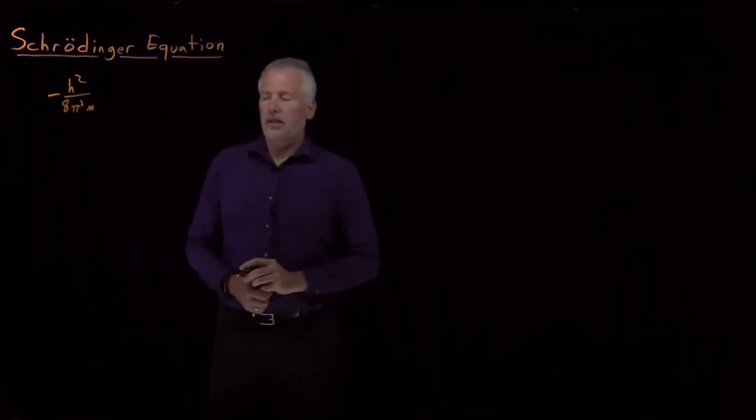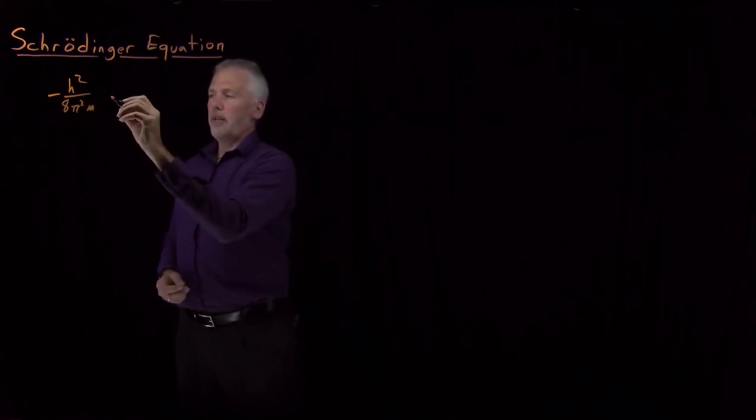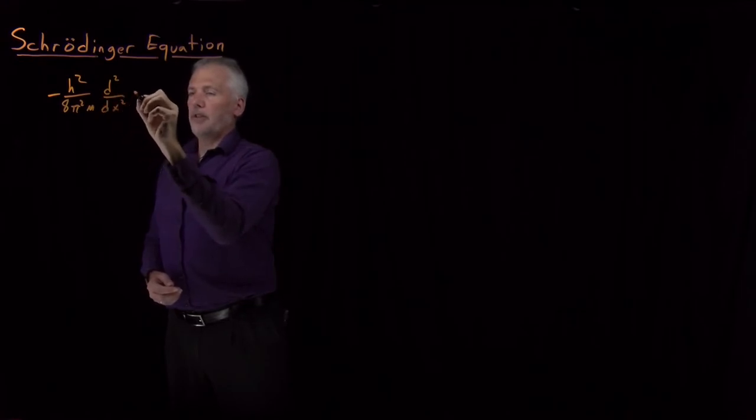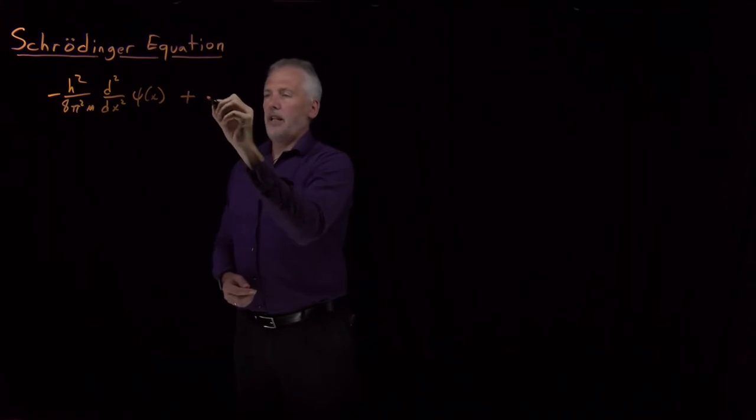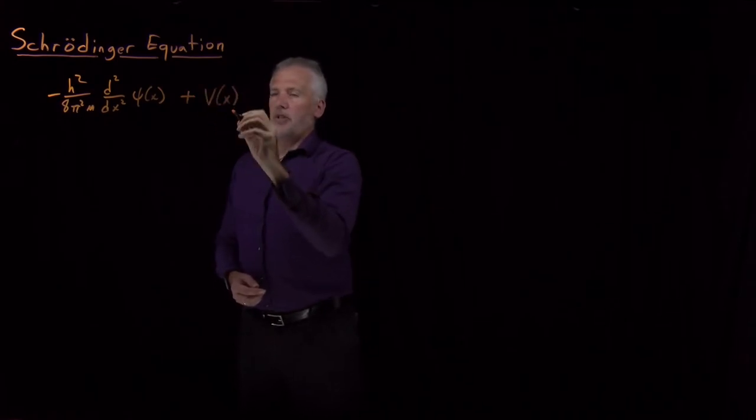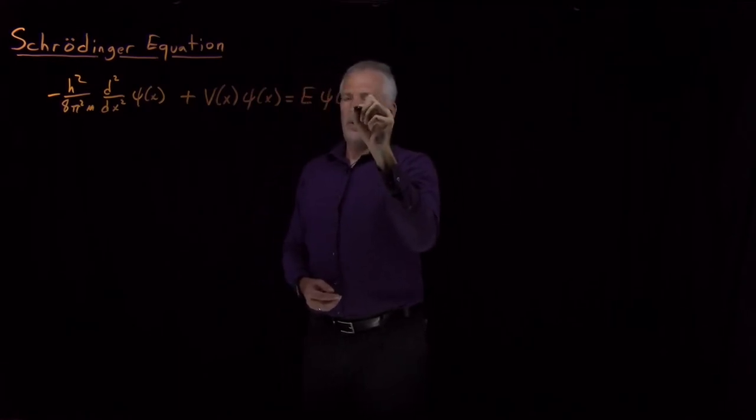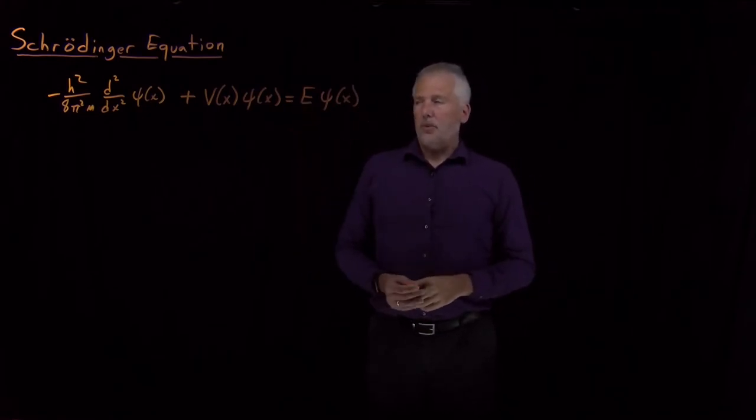This collection of constants—Planck's constant squared over 8π² mass with a negative sign—times the second derivative of the wave function, if I add to that the potential energy times the wave function, what I'll get is the energy, the total energy times the wave function.